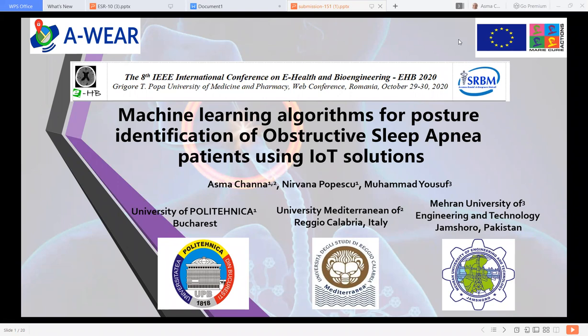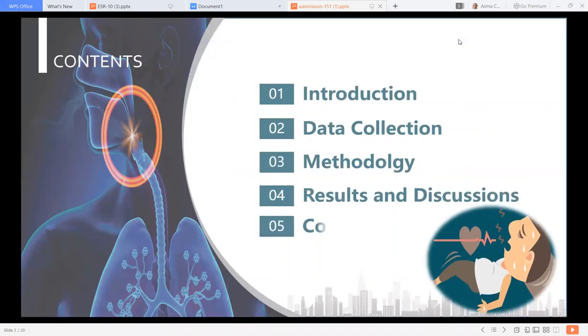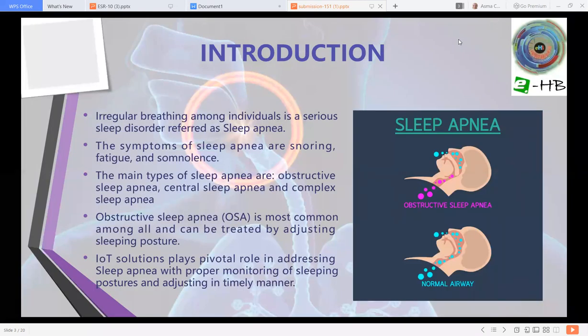Let's first move towards the outline. I will start with the introduction. Irregular breathing among individuals is a serious sleep disorder referred to as sleep apnea. The symptoms of sleep apnea are snoring, fatigue and somnolence. The main types of sleep apnea are obstructive sleep apnea, central sleep apnea and complex sleep apnea. Among these, obstructive sleep apnea is most common and can be treated by adjusting sleeping postures.